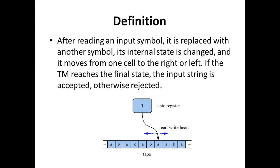After reading an input symbol, it is replaced with another symbol, the internal state is changed, and the head moves from one cell to the right or left. After reading the input symbol, it goes into another state, and the read-write head moves to the left or right side as per the directions shown by the blue arrow marks in the table, as described in this figure.